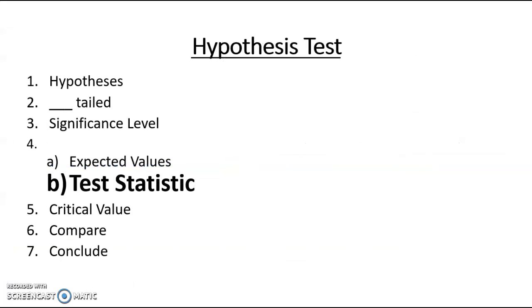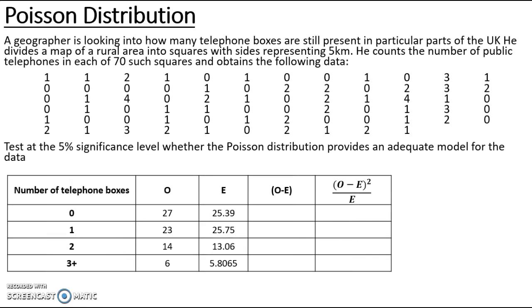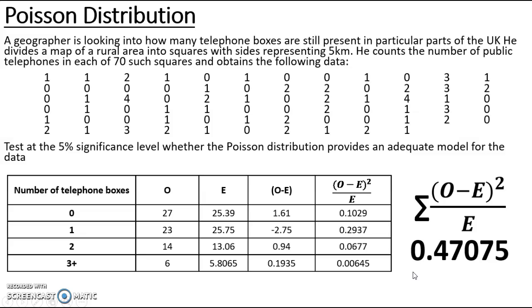Now I've got my expected values I can move on to work out the test statistic. My test statistic uses the formula the sum of (o minus e)² over e. For each observed value which is the frequency and the expected value we've just calculated, we're going to subtract those, square it, and divide by e, and that's going to give me four separate contributions to the test statistic. Then I simply add this column together to get my final chi-squared test statistic of 0.47075.